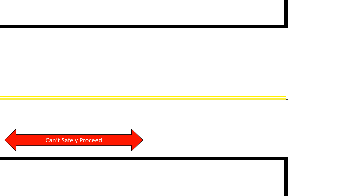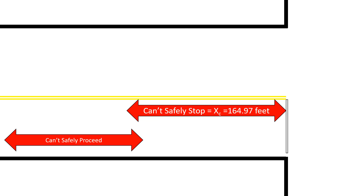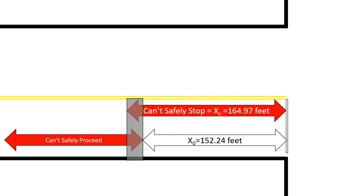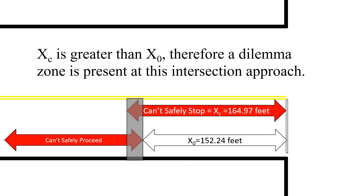Looking at what this means on our intersection diagram: the area where you can't safely stop is x sub c at 164.97 feet, and x sub zero — the area where you can't safely proceed — is 152.24 feet. Since x sub c is greater than x sub zero, that means there is a dilemma zone present at this approach. Any vehicle between 152 and 165 feet from the intersection will be in a zone — small but real — where when they see the yellow indication, they can neither safely stop nor safely proceed. We'd want to change the signal timing for this intersection to remove this dilemma zone.